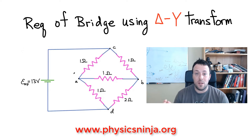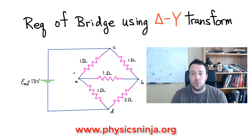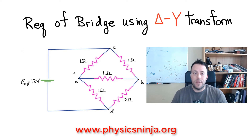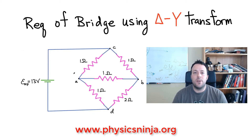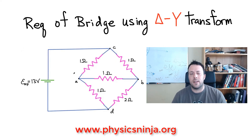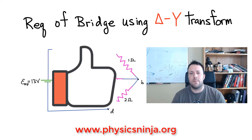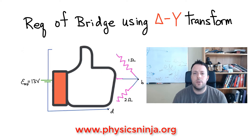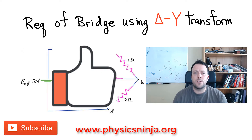First, we'll look at what the delta-Y transformation is, and then there are actually two ways to apply it to this particular bridge problem. I'll show you both ways, and we'll get to the same answer as we previously did using the loop rules and Kirchhoff's junction rule. If you like the video, give it a thumbs up. If you like what I do on this channel, consider subscribing. If you have any questions, just leave them down below and I'll get back to you.